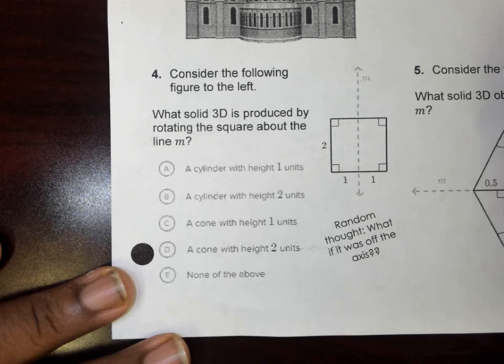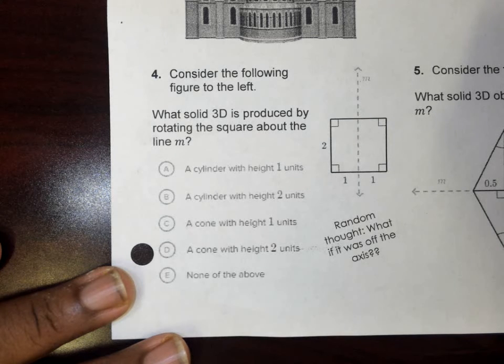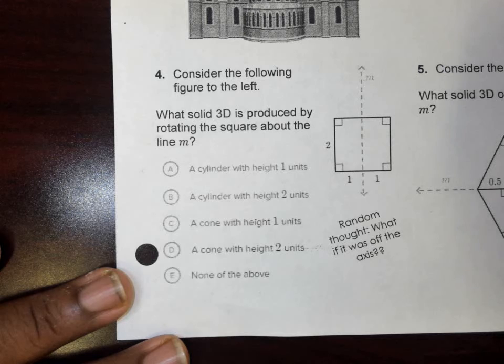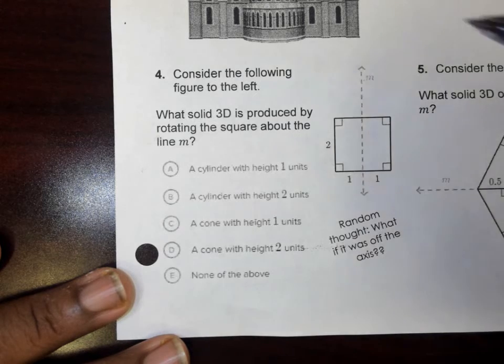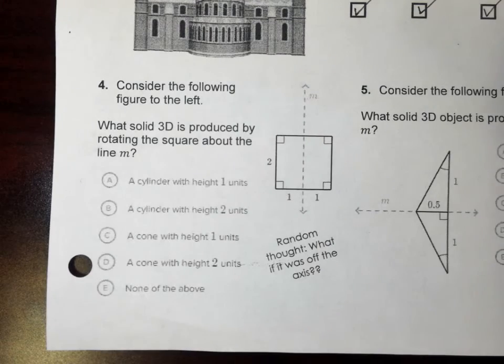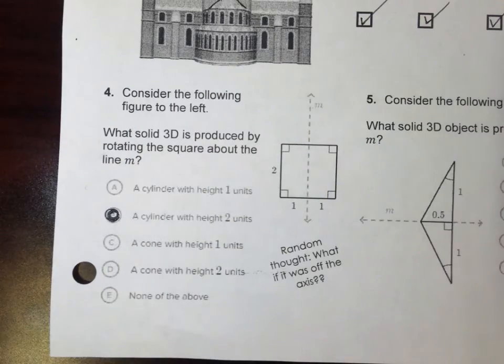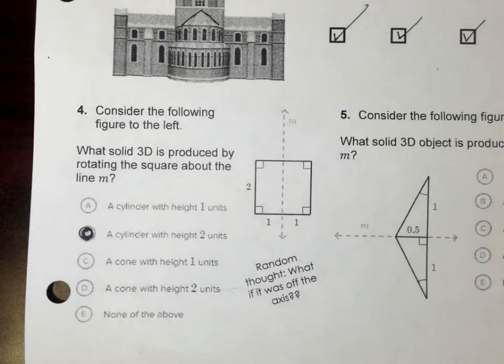You would make a cylinder. You may not see it until you get to the math Excel, but you would make a cylinder. Then after that, we got to go through the choices because only one of them is right. A cylinder with the height of one unit - is that correct? A cylinder with the height of two units? Yes.